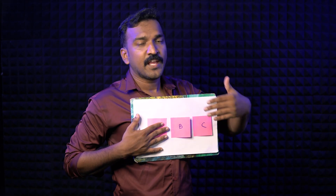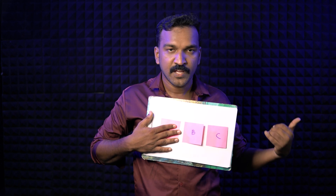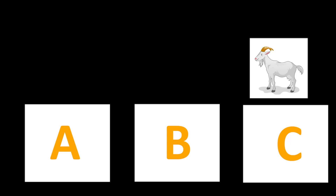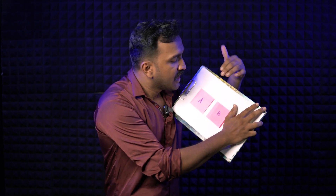Now, you can select door A. There's a car behind one door and another option behind the others. In this option, there's a car. You can select A, and then consider door C.